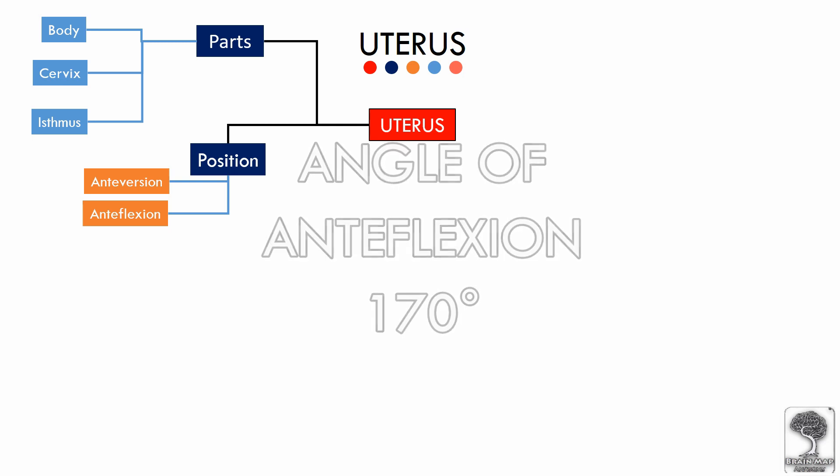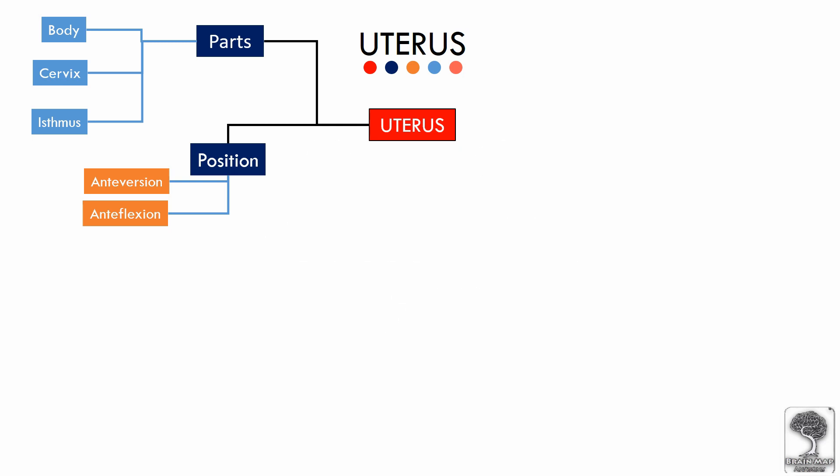These angles are important for the support of the uterus, and when altered will cause prolapse. Also, these angles are frequently tested during Viva Voce in anatomy exams.